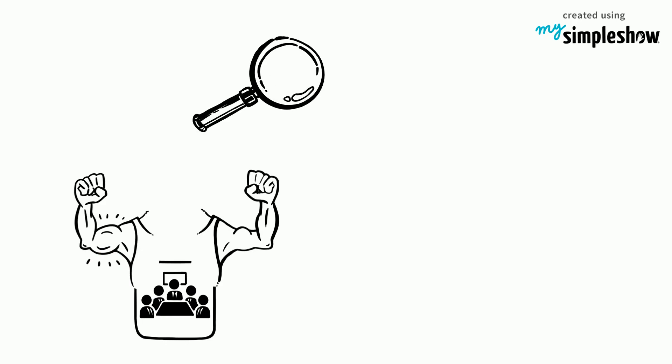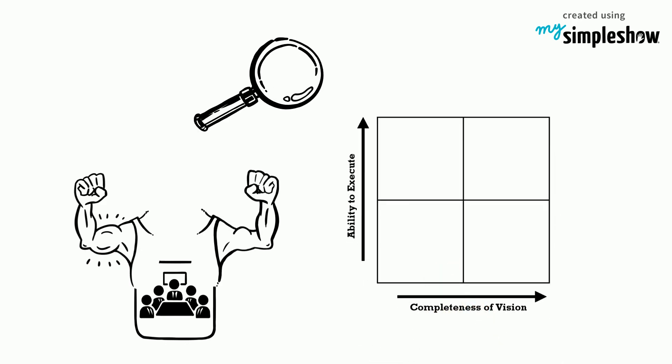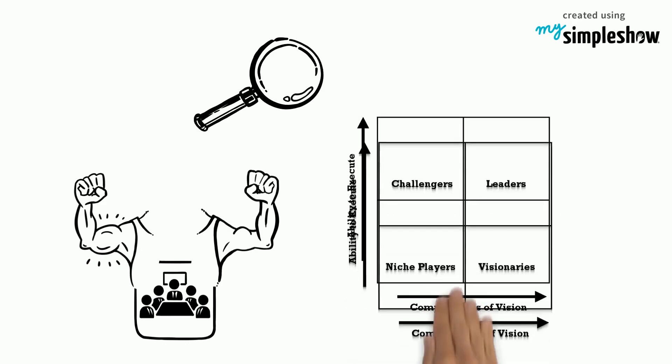Businesses in every category have their own unique strengths and weaknesses. When considering other vendors, examine all four quadrants carefully. And that, my friend, is a magic quadrant.